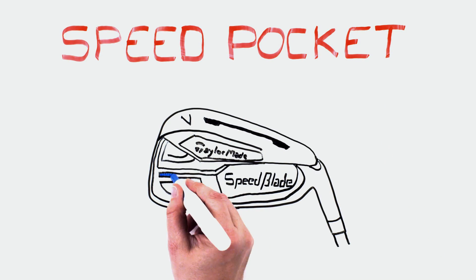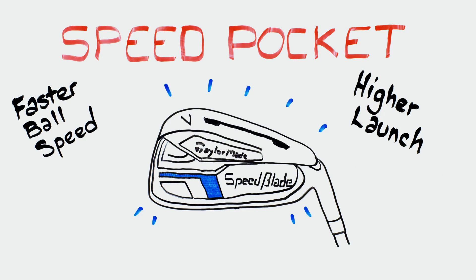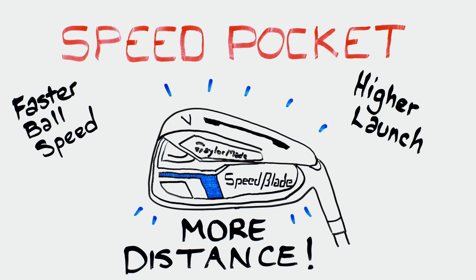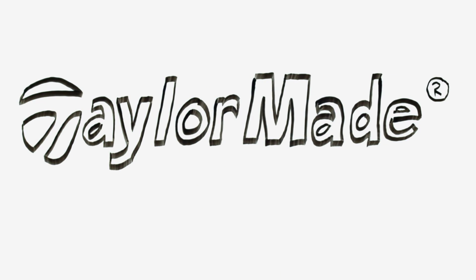So let's review. The speed pocket gives you faster ball speed across the entire face and higher launch, promoting more distance and a quick stopping descent angle. That's why once you experience the power of the speed pocket, you will never play an iron without one again.